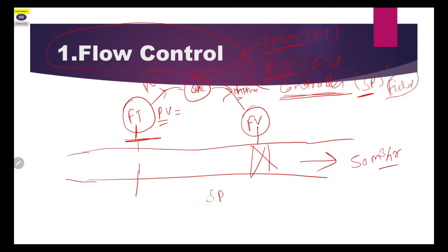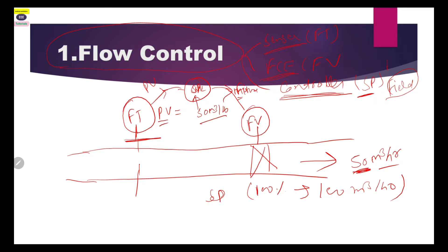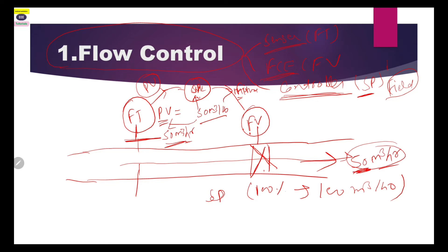Suppose we want the flow through this line to be 50 cubic meters per hour. If the control valve opens 100 percent, it will give 100 cubic meters. So we have given 50 cubic meters as the set value to the controller. The controller monitors the PV value, and when PV matches the set value, it will open the valve so that the flow in this line is 50 cubic meters per hour as required by the operator. This is the flow control strategy used in oil and gas.